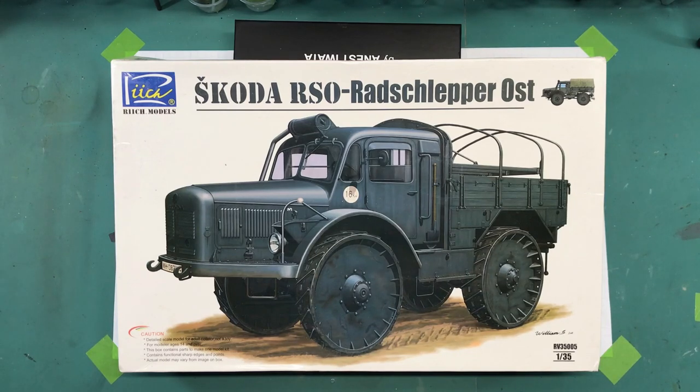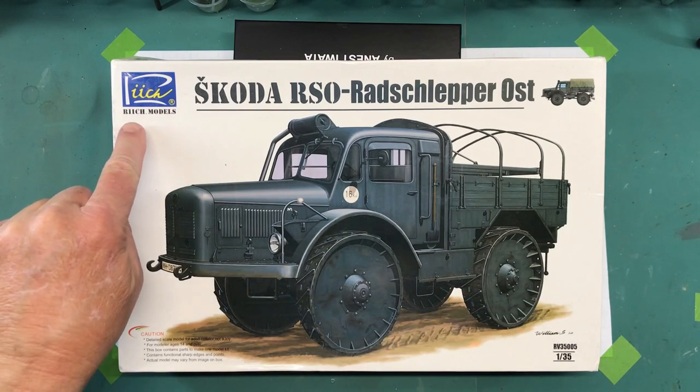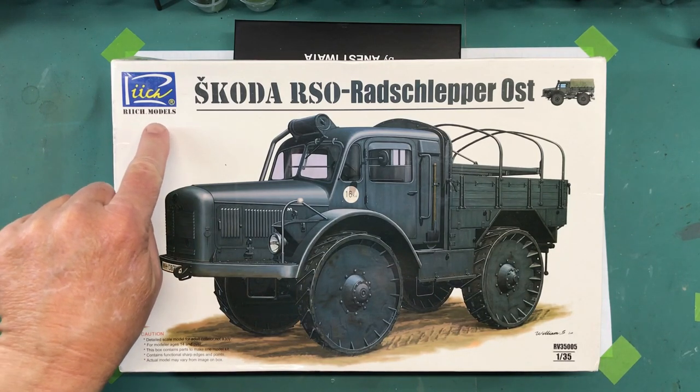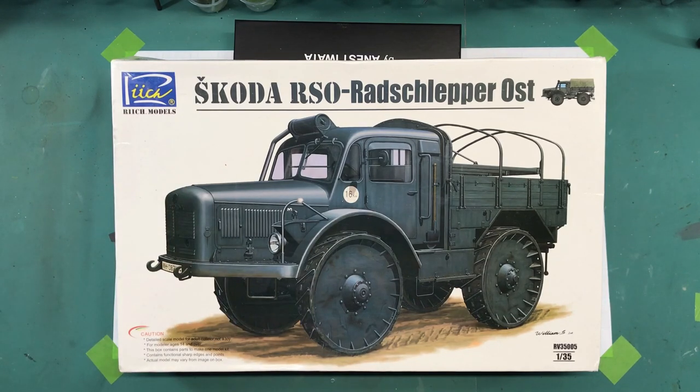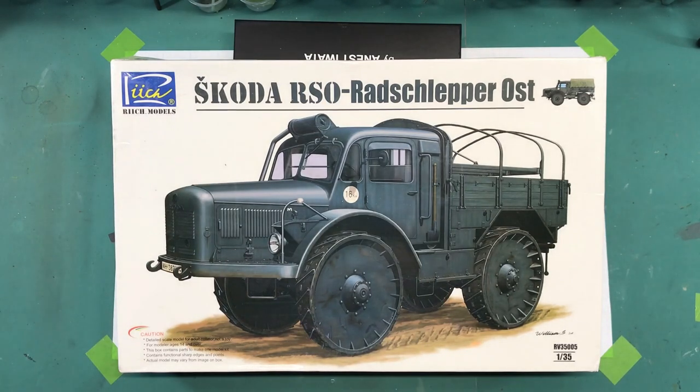So today I'm going to do this. I don't even know how to say that. I'm going to say Rich Models Skoda RSO Radschlepper Ost. That's a mouthful. Kit number RV 35005 in 1:35th scale.